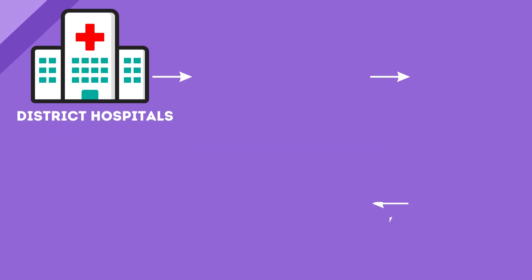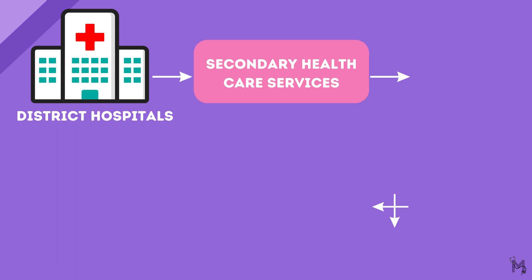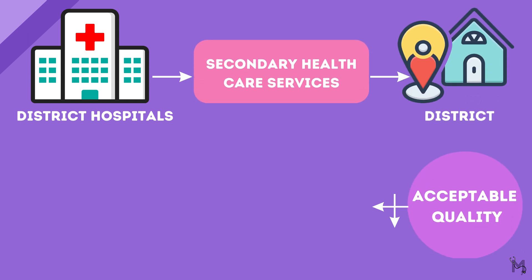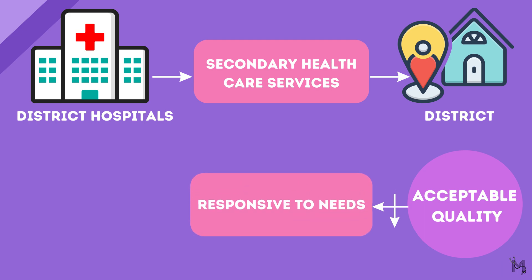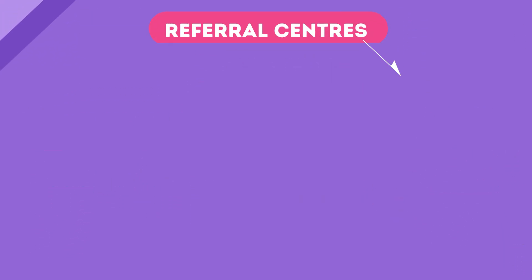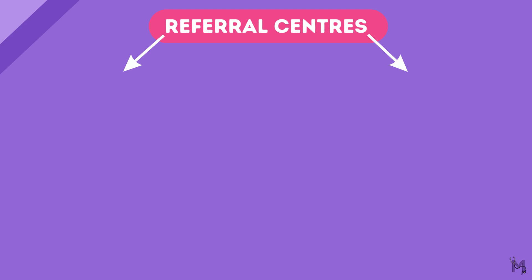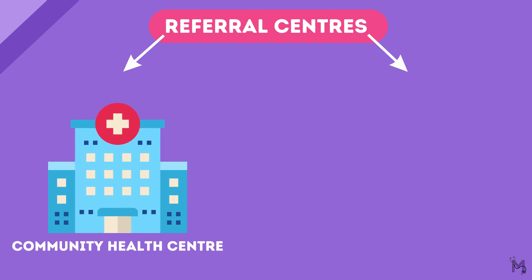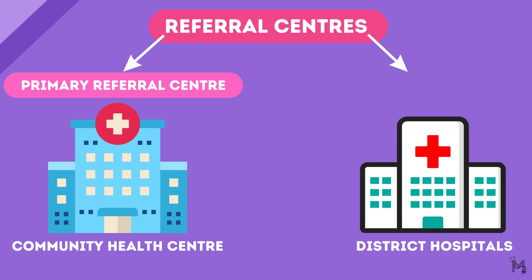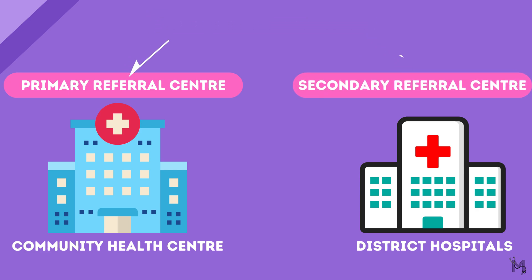The district hospitals aim at providing secondary healthcare services to the people in a district at an acceptable quality, alongside being responsive to the needs of people and the referring centres. As we discussed earlier, the community health centres are the primary referral centres where people are referred from the primary health centres; these district hospitals will serve as secondary referral centres.